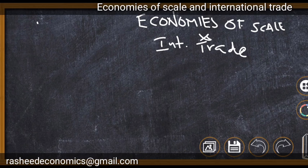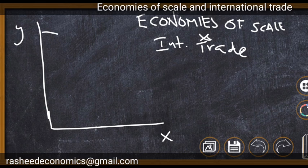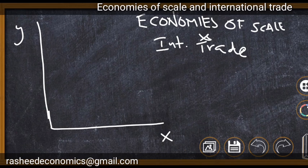On the x-axis we are representing commodity X and on the y-axis we are representing commodity Y. The normal shape of a production possibility curve is concave to the point of origin. But if there are economies of scale, the production possibility curve will be convex to the origin.